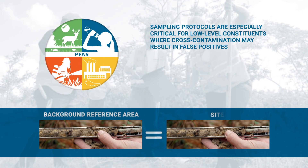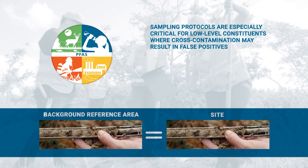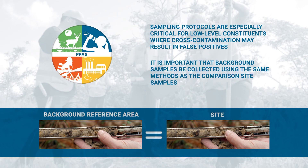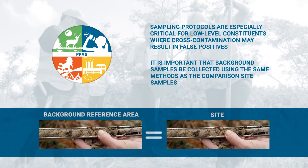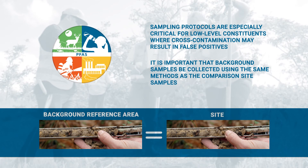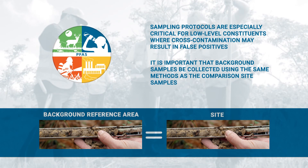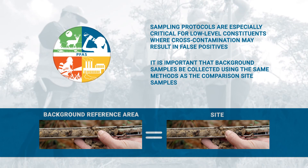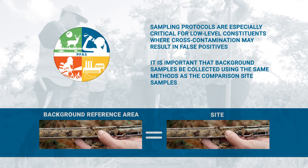Some analytes, such as PFAS, may require specific precautions to avoid sample contamination. As mentioned previously, it is important that background samples be collected using the same methods as the comparison site samples. In some cases, differing conditions such as presence of fill or pavement in only the study area may warrant alternative sampling methods. However, a method should be selected that best represents the method used on the comparison site. For more information on sampling for soil background, see Section 9 of the ITRC Soil Background and Risk Assessment Guidance.